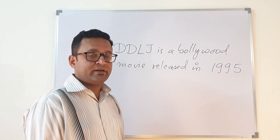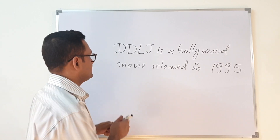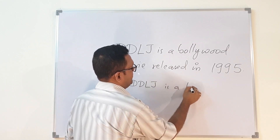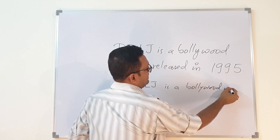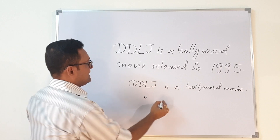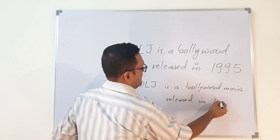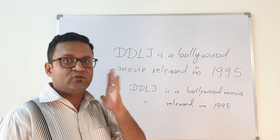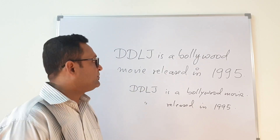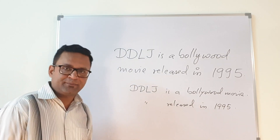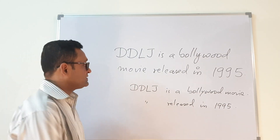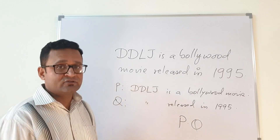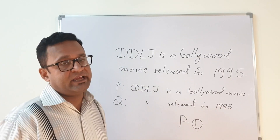This statement has two parts. First: DDLJ is a Bollywood movie. Second: DDLJ was released in 1995. Both these things need to be captured properly. If you consider the first as p and the second as q, then the symbolization is p · q. If you miss out on any one of them, it will not be the right symbolization.